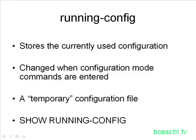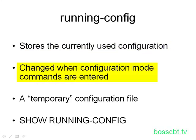Next, let's look at the running configuration file, which stores the currently used configuration. You can think of this as a copy made of the startup configuration file that the switch uses to actually operate — it's a live, active file, whereas the startup config is permanent and referenced when the device boots up. The running config is what's actually being used to run and operate the switch. When you make changes in configuration mode, those changes are applied to your running config, not directly to the startup config.